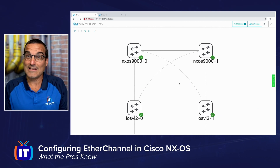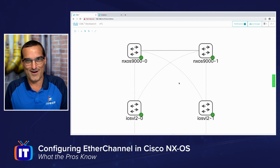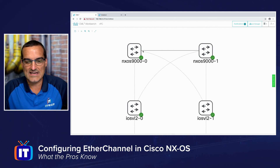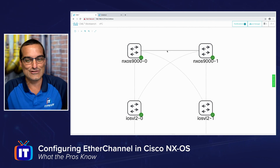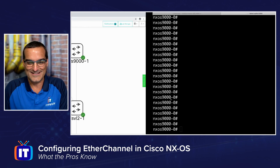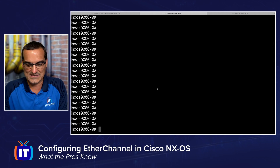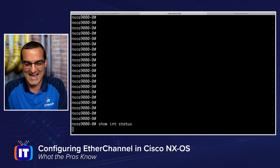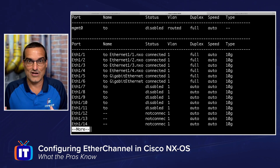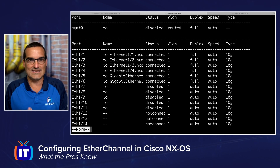Here we are in the CML product. In my Cisco Modeling Labs, I've got a couple of Nexus 9Ks, and it looks like they're connected with one big link, but sure enough, that is four different links. Let's confirm that by doing show interface status — Ethernet 1.1 through 1.6 have connectivity in our topology, and specifically 1.1 through 1.4 are connected to the other NXOS device. So let's bundle those together in an EtherChannel.